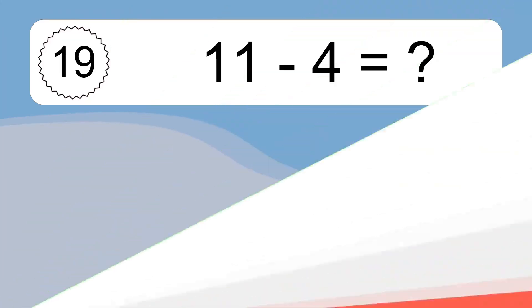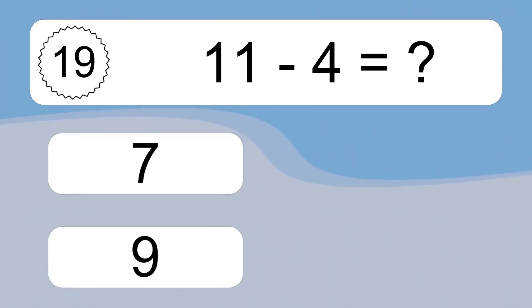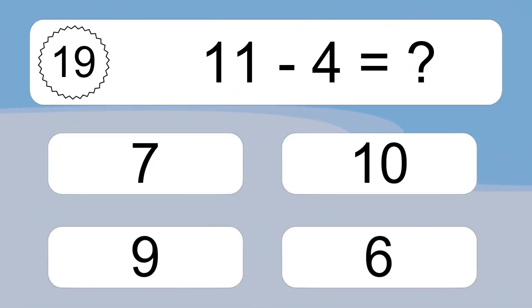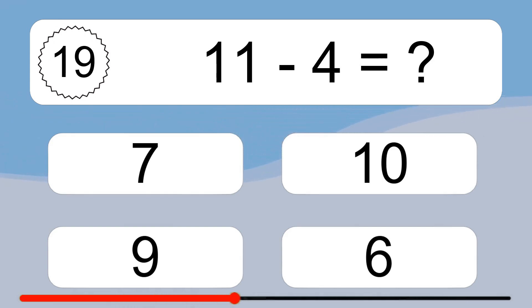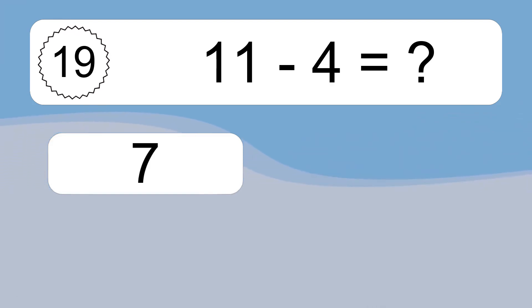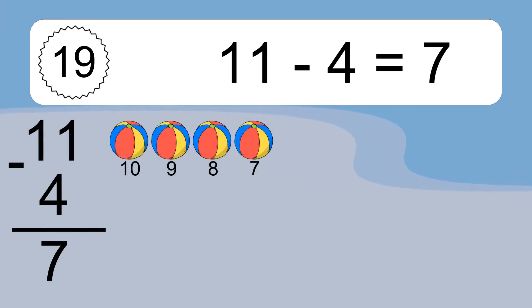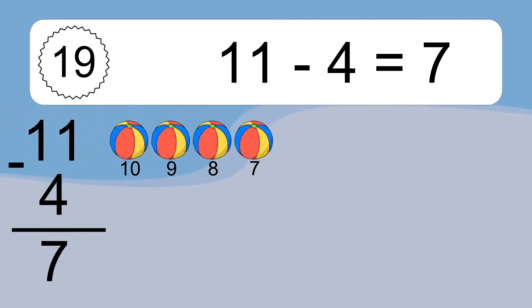11 minus 4 equals what? 11 minus 4 equals 7. Let's count it: 10, 9, 8, 7.